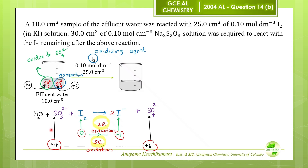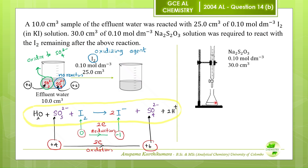Next, balance the number of hydrogen atoms. There are 2 hydrogen atoms on the left and no hydrogen atoms on the right. So we have to add 2 H⁺ ions to the right. This is the balanced ionic equation for the reaction between iodine and sulphite ions. Next, 30 cubic centimetres of 0.1 moles per cubic decimetre sodium thiosulphate solution was required to react with the I₂ remaining after the above reaction. This sodium thiosulphate reacts with remaining I₂, which means during the first step iodine was added in excess.